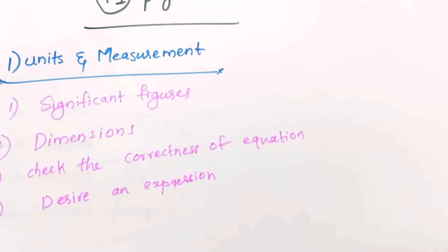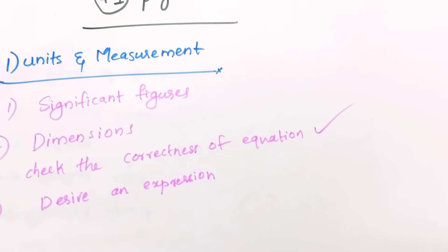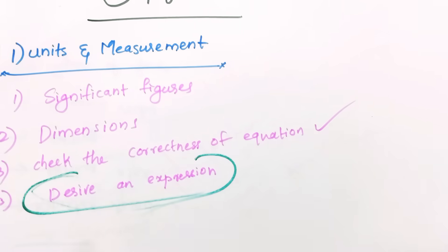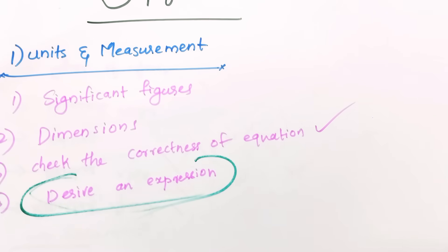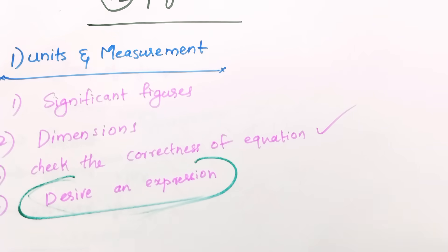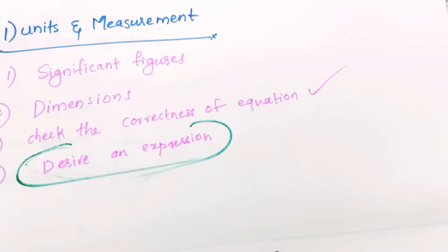Units and Measurements, Significant Figures, Dimensions. Check the correctness of an equation. Derive the expression — the derivation section is under Unit Measurement. Check the correctness of equation for the period of oscillation of a simple pendulum. You can use Dimensional Analysis.